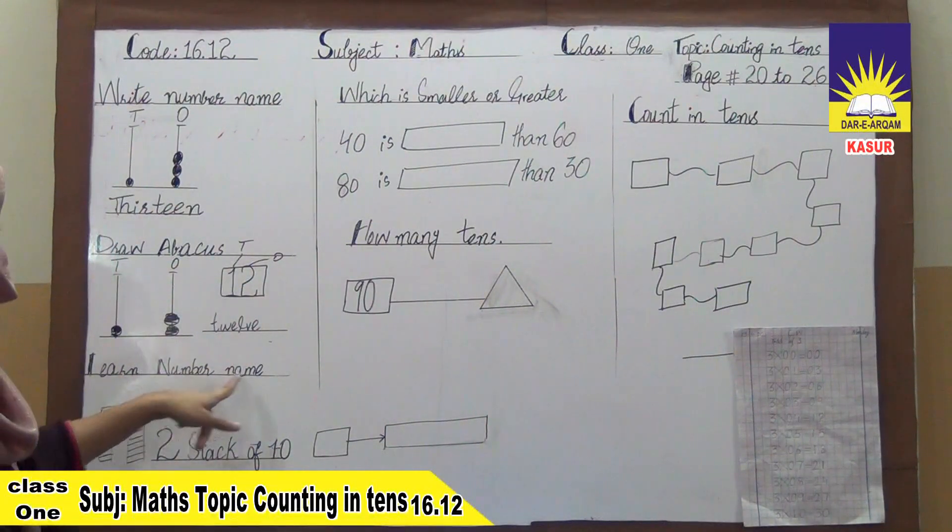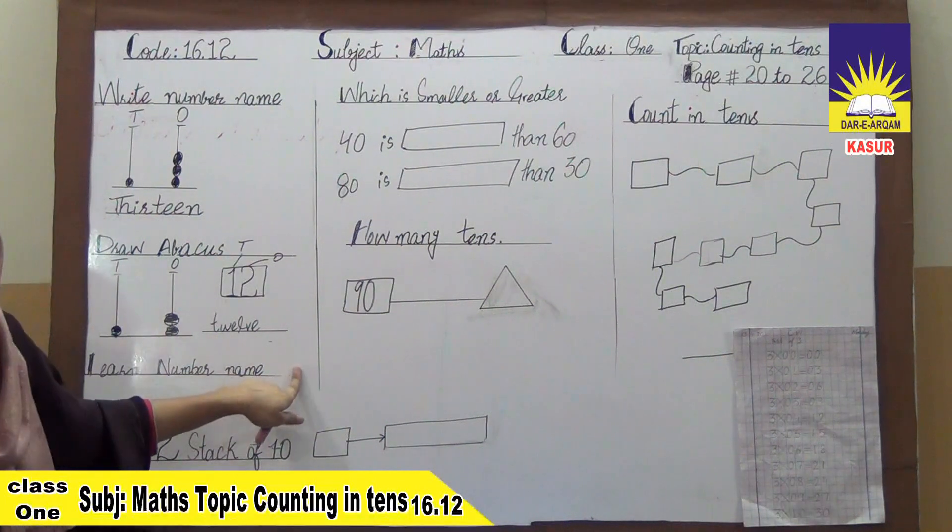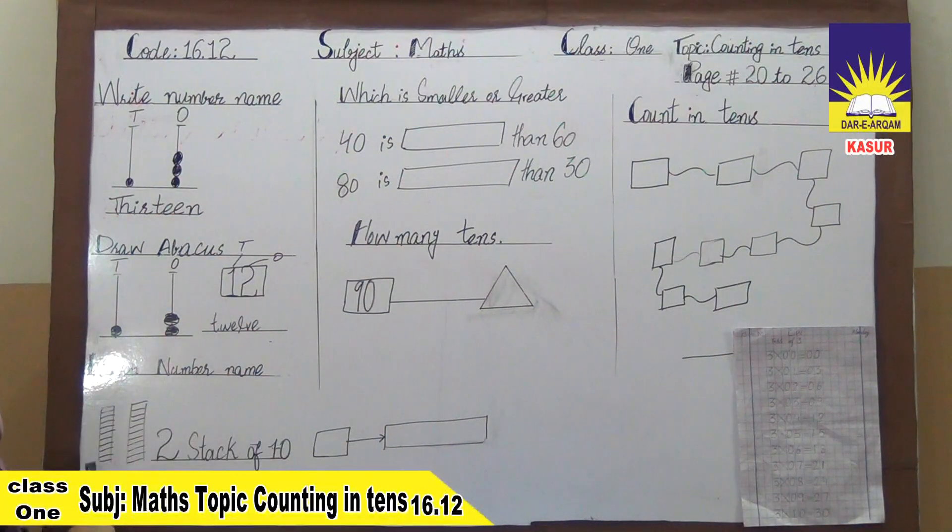Now our third question is learn number name. Here we have written number name. Here we have a diagram. Here we have two diagrams. Here we have blocks. These are tens.